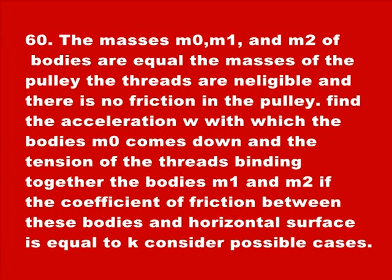Find the acceleration W with which the body M0 comes down and the tension of the thread binding together the bodies M1 and M2. If the coefficient of friction between these bodies and the horizontal surface is equal to K, consider possible cases.